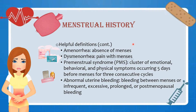Additional important definitions: amenorrhea means absence of menses; dysmenorrhea refers to pain with menses; premenstrual syndrome or PMS refers to a cluster of emotional, behavioral, and physical symptoms occurring five days before menses for three consecutive cycles; and abnormal uterine bleeding refers to bleeding between menses, or infrequent, excessive, prolonged, or postmenopausal bleeding.